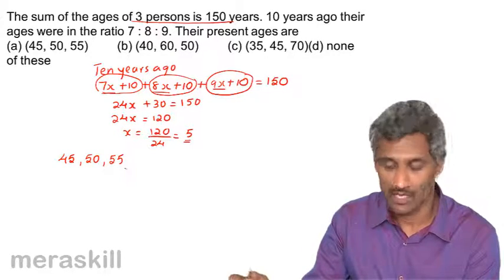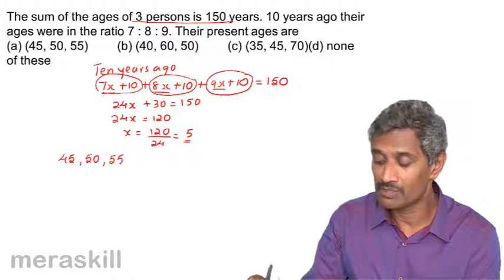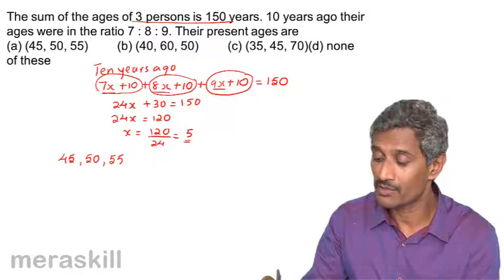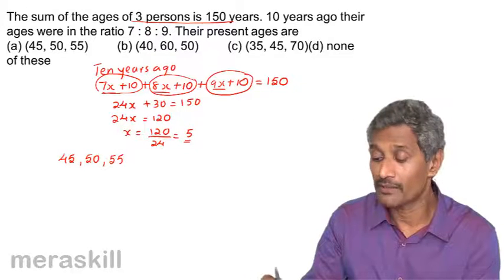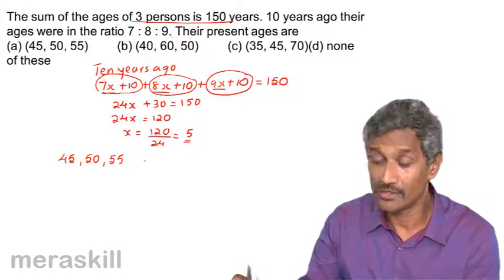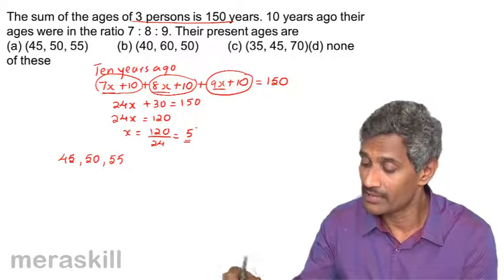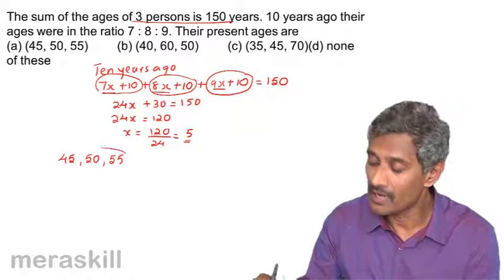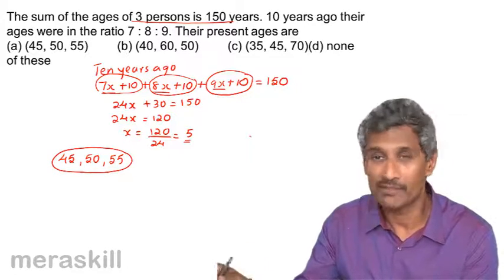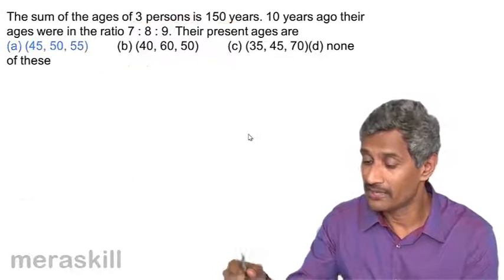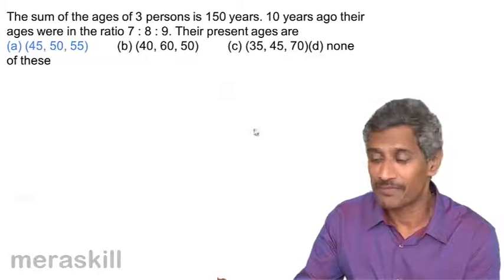You can see that their sum is 150, and 10 years ago if you look at it, they were 35, 40 and 45, and that ratio is according to 7 is to 8 is to 9. So now, hence our answer is 45, 50 and 55. Let's verify. Once again, and yes, it's 45, 50 and 55.